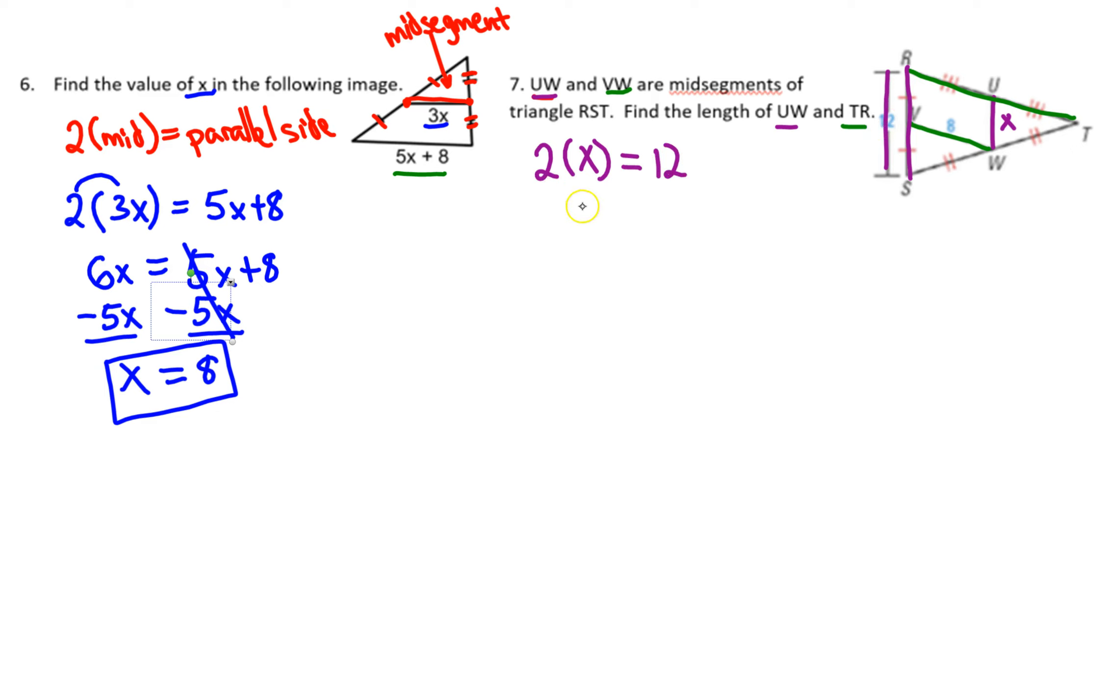2x equals 12. Divide both sides by 2: x equals 12 divided by 2, or 6. So the measure of UW is 6.